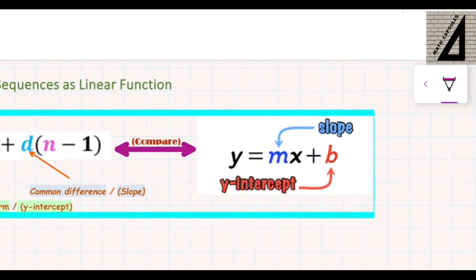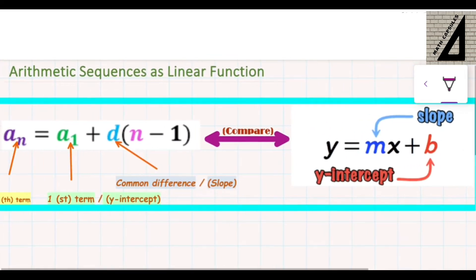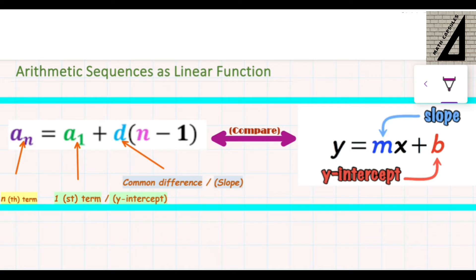If you compare both formulas together, you will find that y replaces the a sub n and a sub 1 replaces the y-intercept. And d, which is the common difference, replaces the slope m. And of course, n minus 1 is in place of x here.